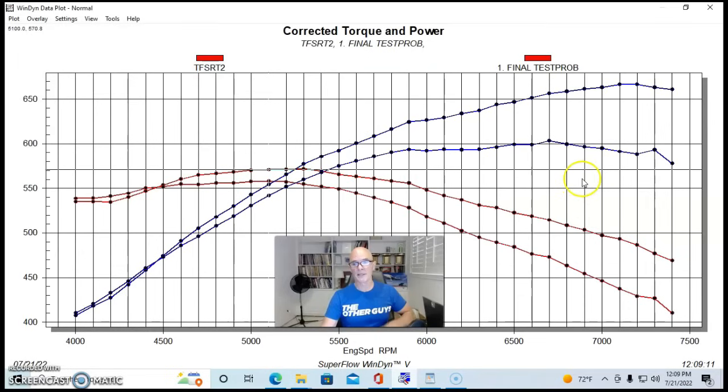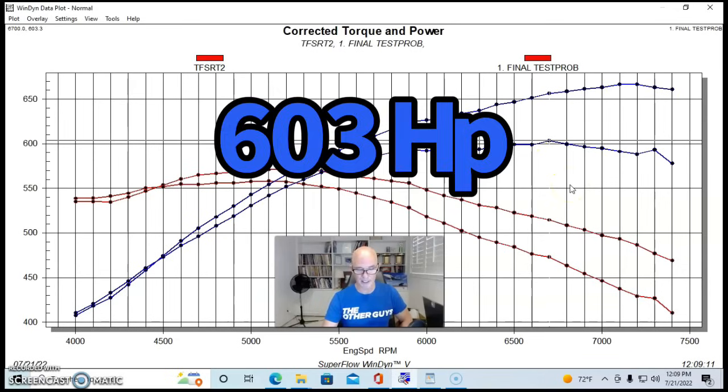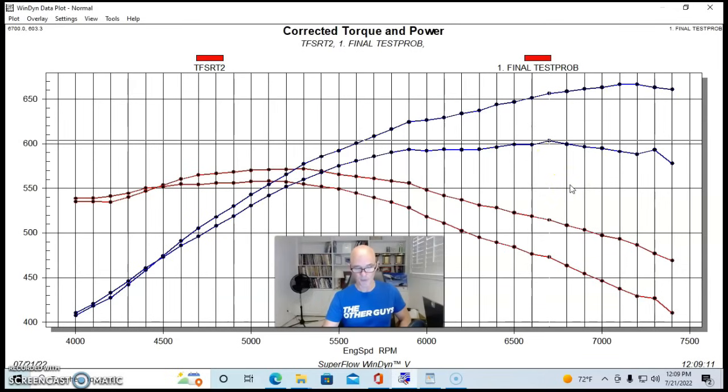Here are the power results of the Pro Top Line head. You can see they didn't make anywhere near as much power as the Twisted Wedge R head. They made a peak of 603 horsepower at 6600 and 554 foot-pounds at 5000. They did flow about 30 to 35 CFM less than the Twisted Wedge R heads, and the Twisted Wedge R heads have a really efficient combustion chamber as demonstrated by the fact that they wanted and made best power with less timing.